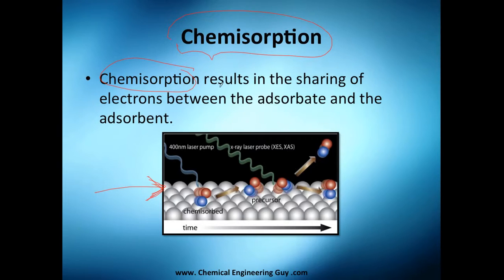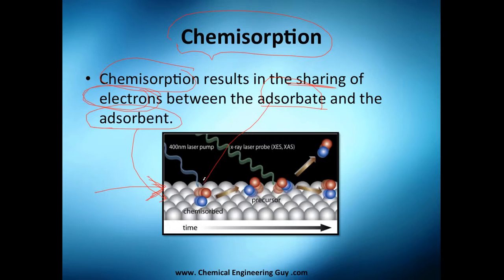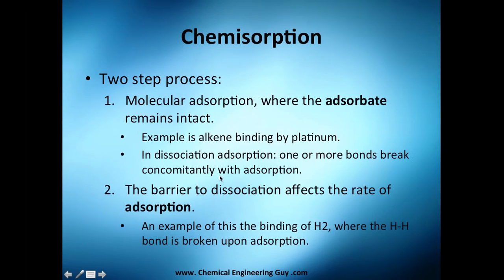By definition, chemisorption is the result of the sharing of electrons between the adsorbate and the adsorbent. The adsorbent will be the catalyst and the adsorbate will be the reactant, or even the product once it's already produced. It's a two-step process — first, molecular adsorption where the adsorbate remains intact.